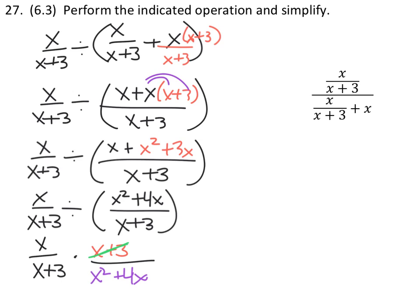So after reciprocating it, some of you noticed that we can cancel out this x plus 3s in both the numerator and denominator. But not only that, I can also factor out an x from x squared plus 4x, which, yes, will allow me to cancel that x.